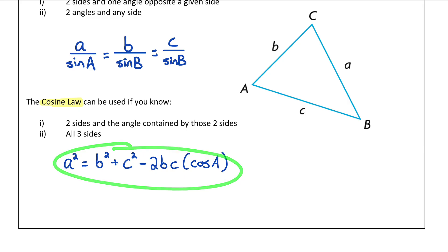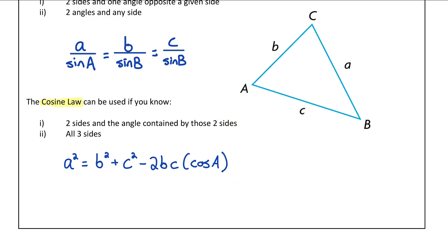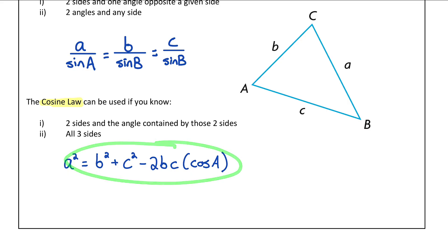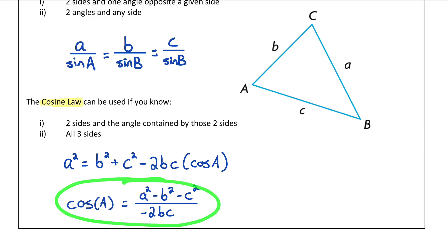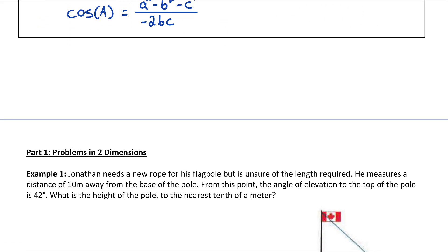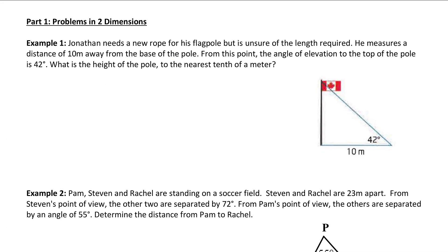The first format of cosine law is used when you know two sides and the angle contained by those two sides. For example, if we knew side B and side C, and angle A contained by those two sides, we could solve for side A. If we rearrange that formula to isolate cosine of the angle, we get a version of cosine law used to solve for an angle when we know all three sides. Now let's do examples using these tools, starting with problems in two dimensions.